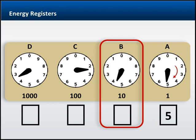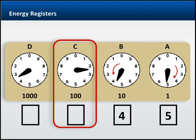Register B, which is the 10s column, moves in the counterclockwise direction. Notice its pointer is past 4 but hasn't gotten to 5. So the unit associated with this register is 4.